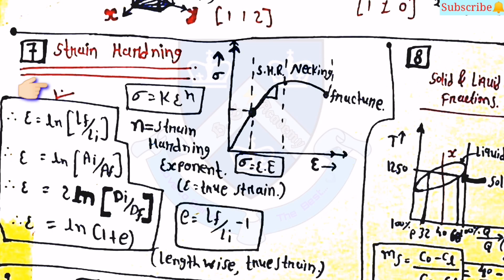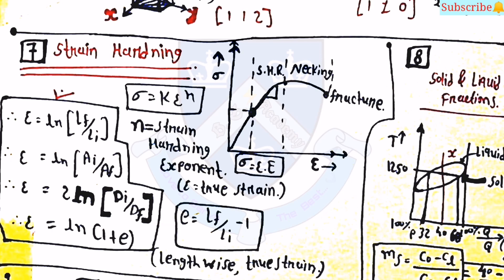The next topic is strain hardening. Some equations are important here. True strain epsilon equals ln(Lf/Li), also epsilon equals ln(Ai/Af), and epsilon equals 2 times ln(Di/Df), and epsilon equals ln(1 plus e). The flow stress equation is sigma equals K times epsilon raised to n, where n is the strain hardening exponent and e equals (Lf/Li) minus 1. Note that at small strains, epsilon approximately equals e, and sigma equals E times epsilon. There is also a diagram for stress versus strain.